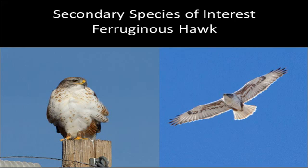Next is a species of greatest conservation need in most of our intermountain west states — the ferruginous hawk. These are the largest buteo or soaring hawk in North America. When perched, they often show a very bright white breast that just glows, and their head often looks squat and flattened at the top and grayish. If you get good views, ferruginous hawks can be distinguished by their feathered tarsi — feathers coming all the way down the legs to the base of the toes — and a large gape where the yellow mouth opening extends way back below the eye.